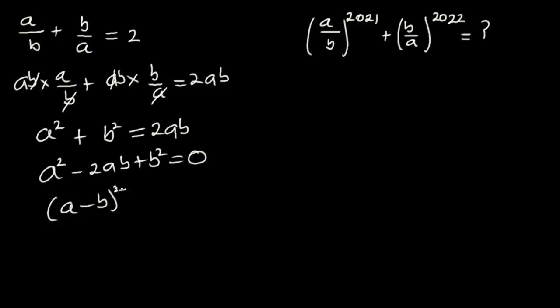Now we want to make a minus b stand alone, so we can do that by taking the positive square root of both sides. When we do that, you are going to have a minus b is equal to the square root of zero.